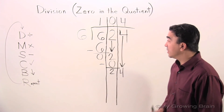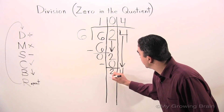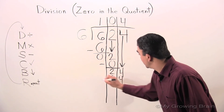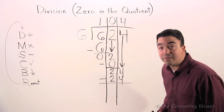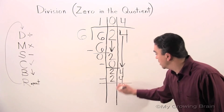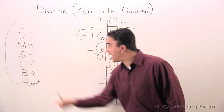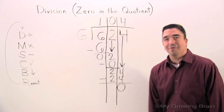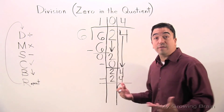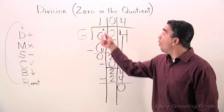What's the next step? Let's see — multiply. Six times four is twenty-four. Next step: subtract. Twenty-four minus twenty-four is zero. Bring down — what do you know, there's nothing to bring down. Therefore, we're done. Our quotient is 104.